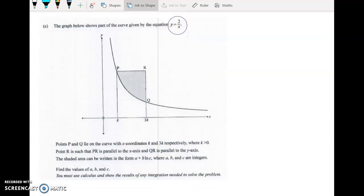And we're told that points P and Q lie on the curve with coordinates k and 3k respectively, where k is positive.